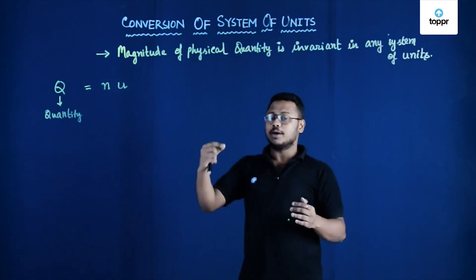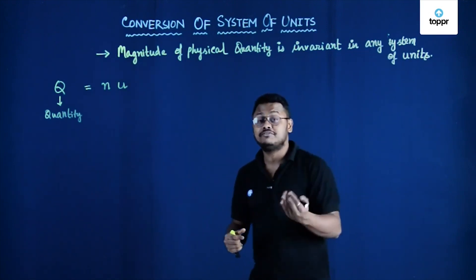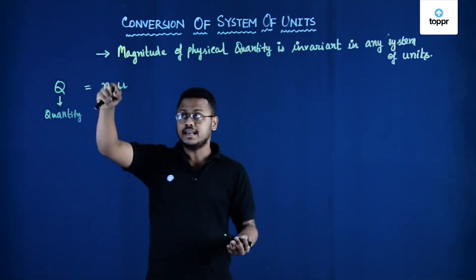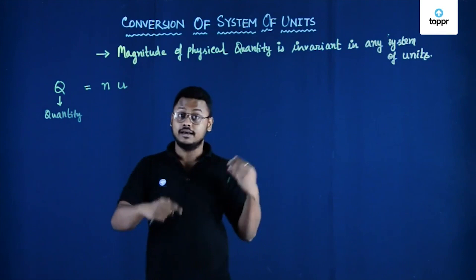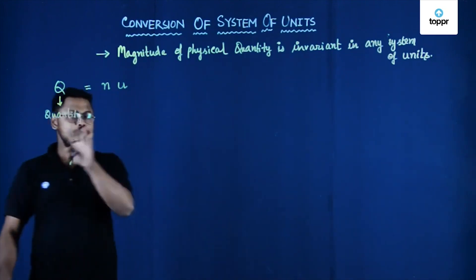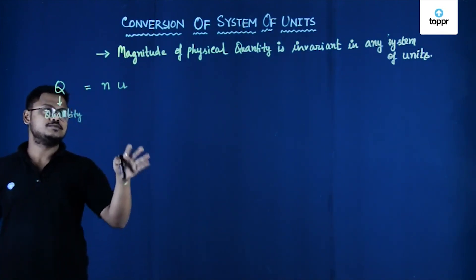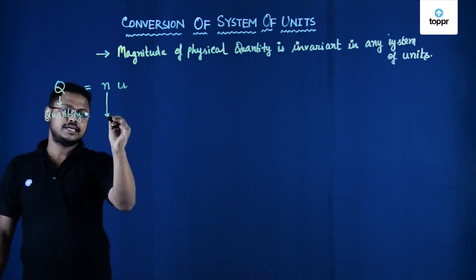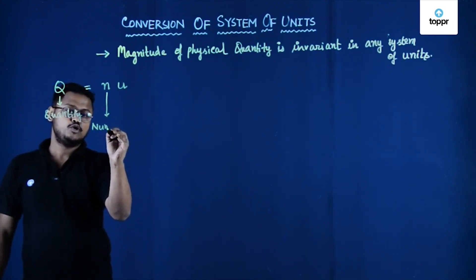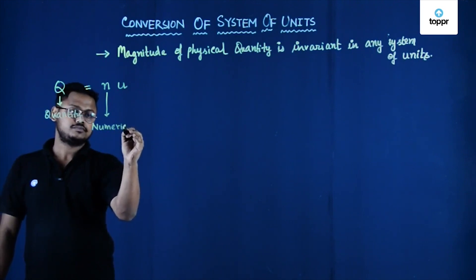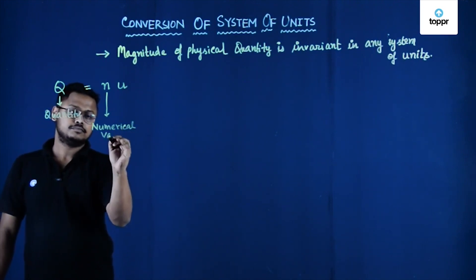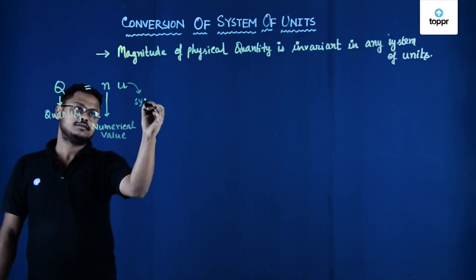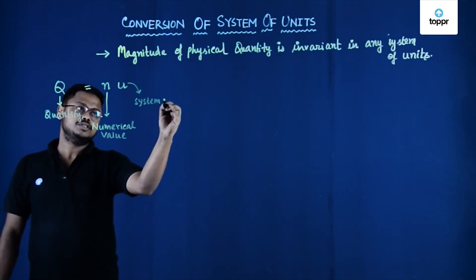For example, if you talk about 5 kg, someone else is talking about 5,000 grams — both are the same. In that case, N would be 5,000 and U would be grams. So any quantity can be represented in terms of a numerical value N and a system of unit U.